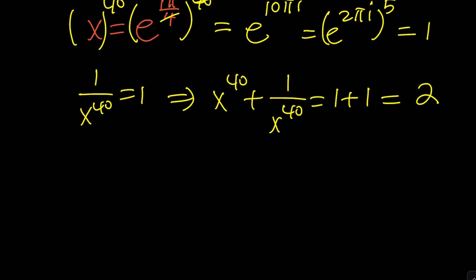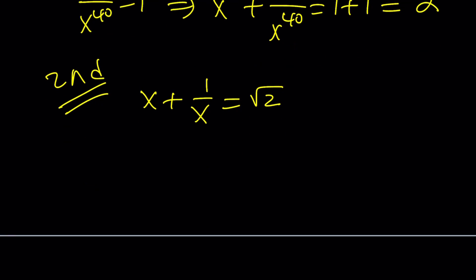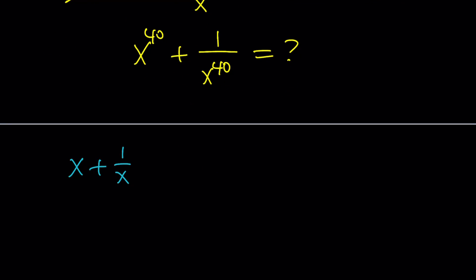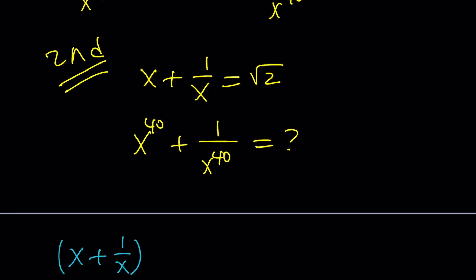Let's take a look at another way to approach this problem — the second method. We have x plus 1 over x equals square root of 2, and we need x to the 40th plus 1 over x to the 40th. You could use the binomial theorem, but you don't have to go to the 40th right away. You could square the expression, then square it again to get the fourth power. Think about the prime factorization of 40, which is 2 cubed times 5. You could proceed that way, but there's another way.